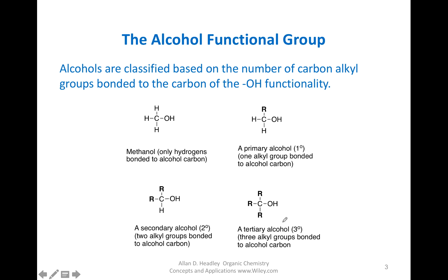Let us concentrate now on the classification of alcohols. Alcohols are classified based on the carbon to which the OH is bonded. If this carbon has 1, 2, 3 hydrogens, it is a molecule known as methanol. If this carbon has one alkyl group, it's known as a primary alcohol.